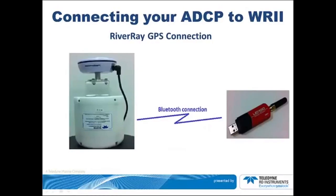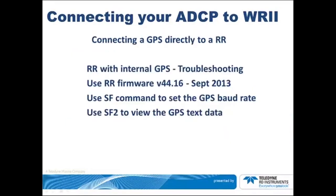In the case of the RiverRay, the GPS is connected directly into the RiverRay via the black cable shown in the picture. Within the RiverRay, the GPS messages are incorporated into the PD0 ensemble data stream and sent over a single Bluetooth connection back to the laptop. For troubleshooting, use the RiverRay firmware version 44.16 which came out in September 2013. Use the SF command to set the GPS baud rate, and SF2 to view the GPS text data.